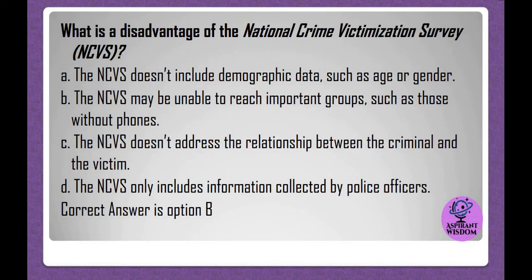What is a disadvantage of the National Crime Victimization Survey (NCVS)? A. The NCVS doesn't include demographic data, such as age or gender. B. The NCVS may be unable to reach important groups, such as those without phones. C. The NCVS doesn't address the relationship between the criminal and the victim. D. The NCVS only includes information collected by police officers. Correct answer is option B.